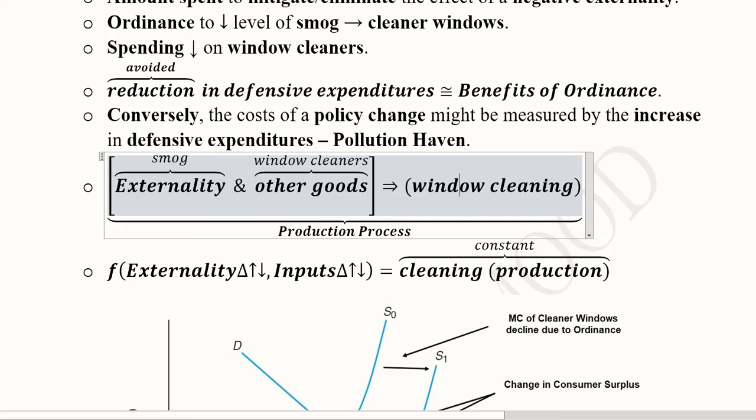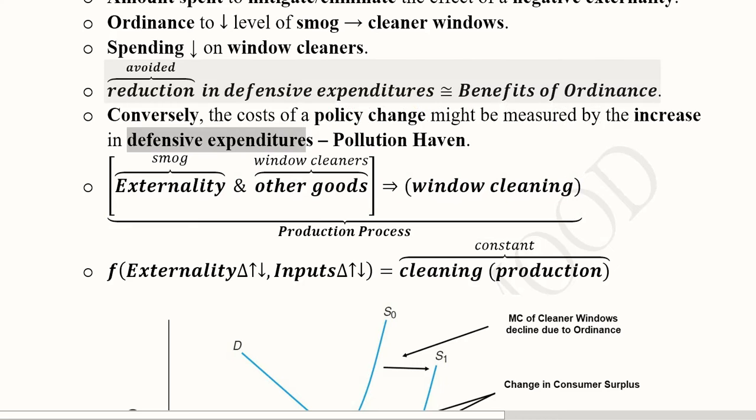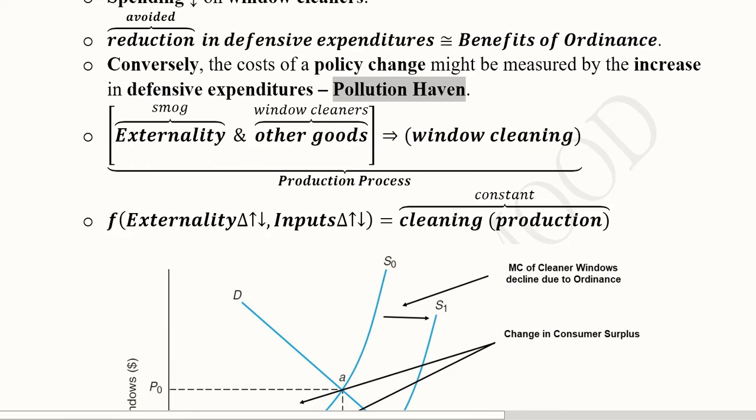On the contrary, if some policy brings increased pollution, then there will be increase in the defensive expenditure. So that's the other side of the policy. And this can be exemplified with the help of pollution haven hypothesis or effect in which pollution can increase in such areas where pollution control policies are weak. So in this way, the ordinance can be assessed using the defensive expenditures and their change.